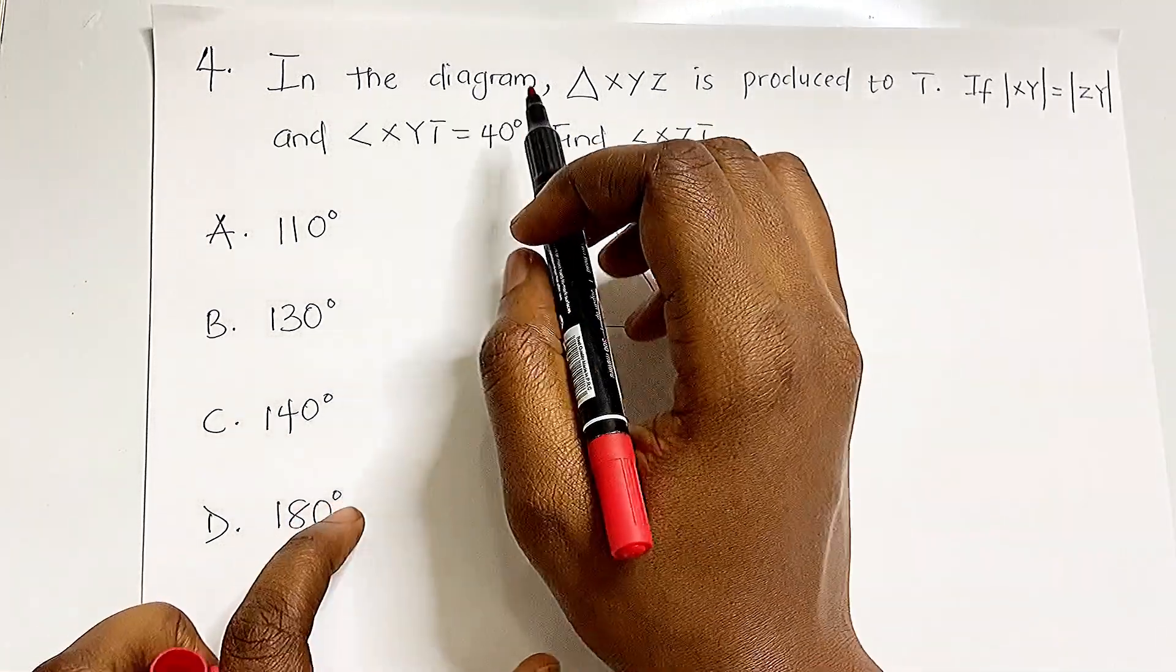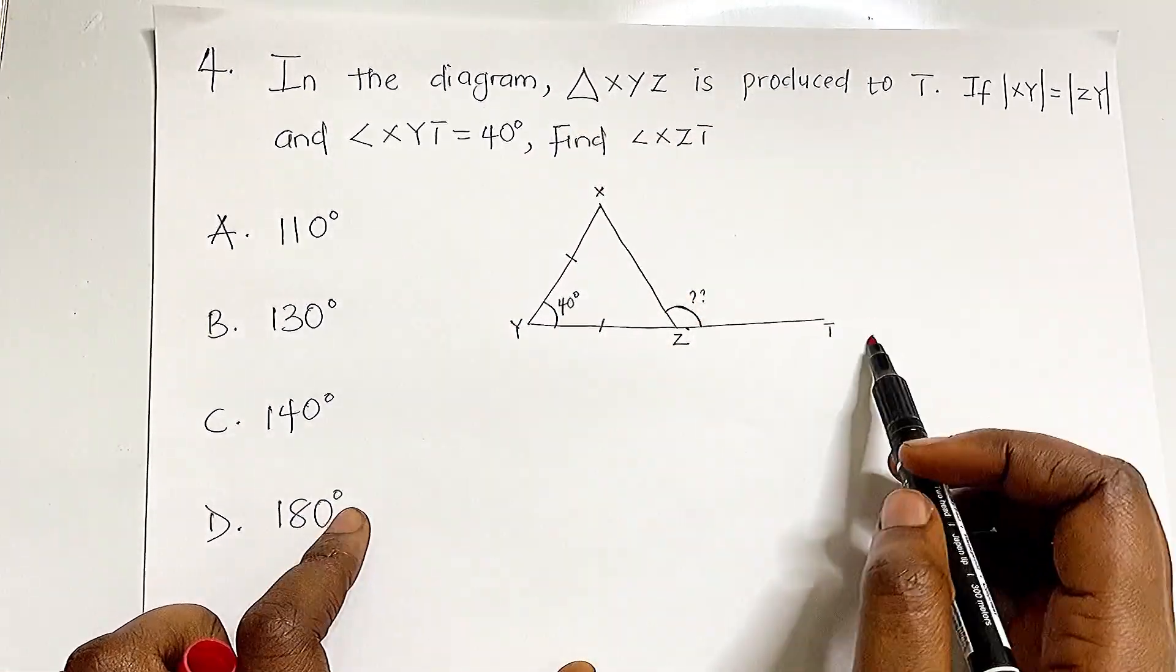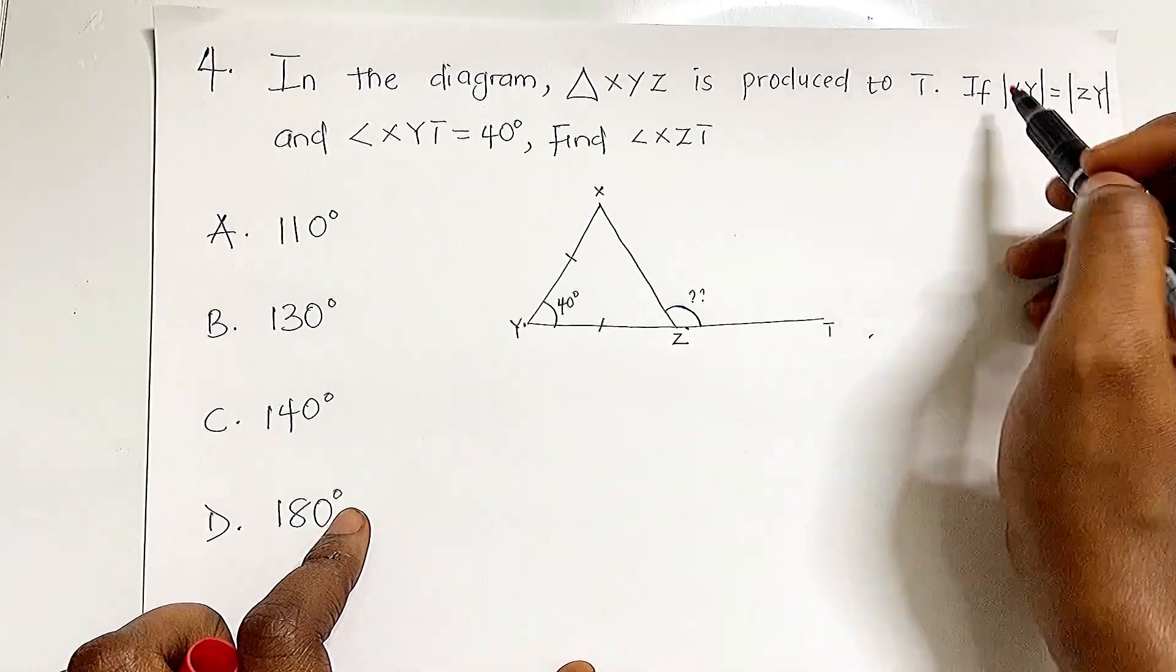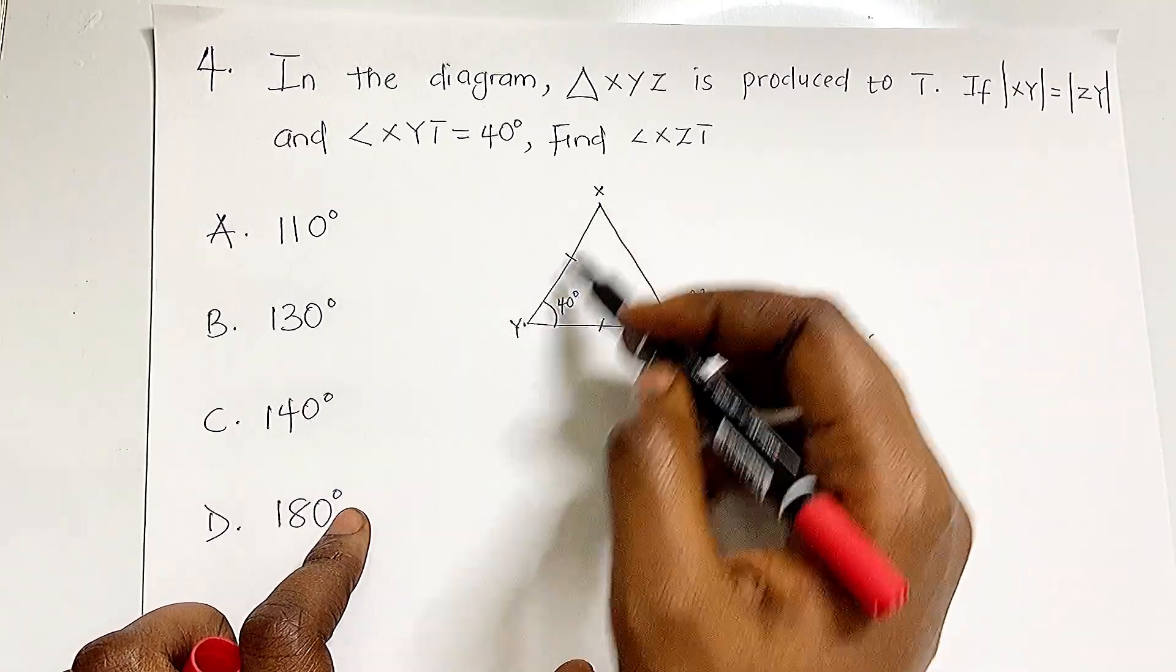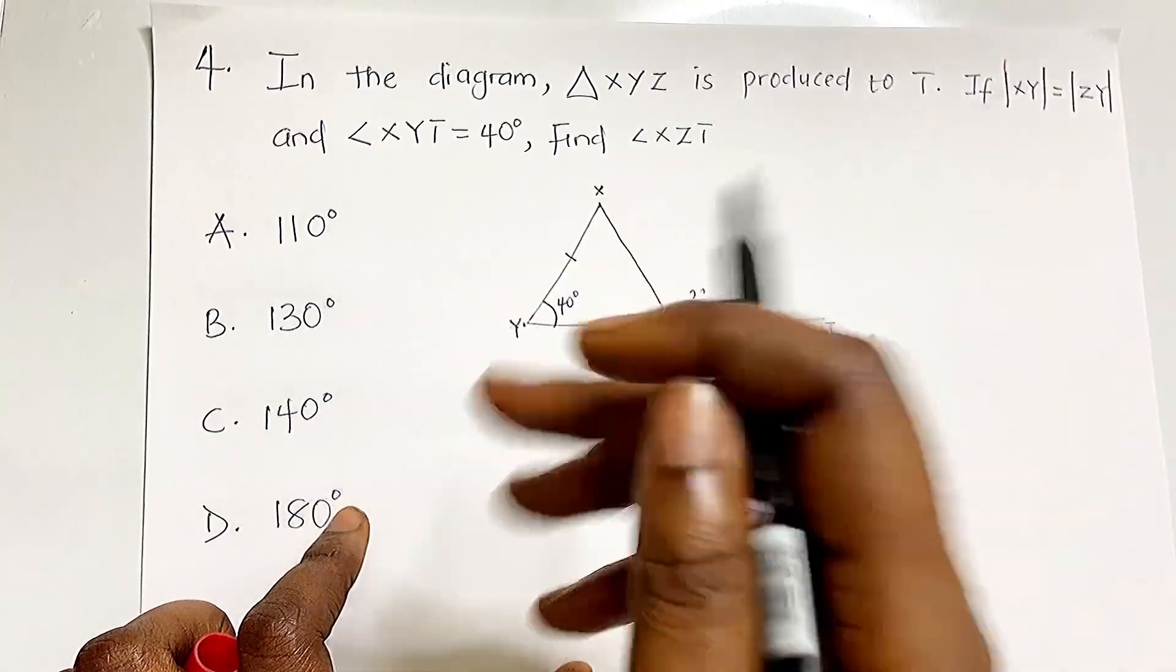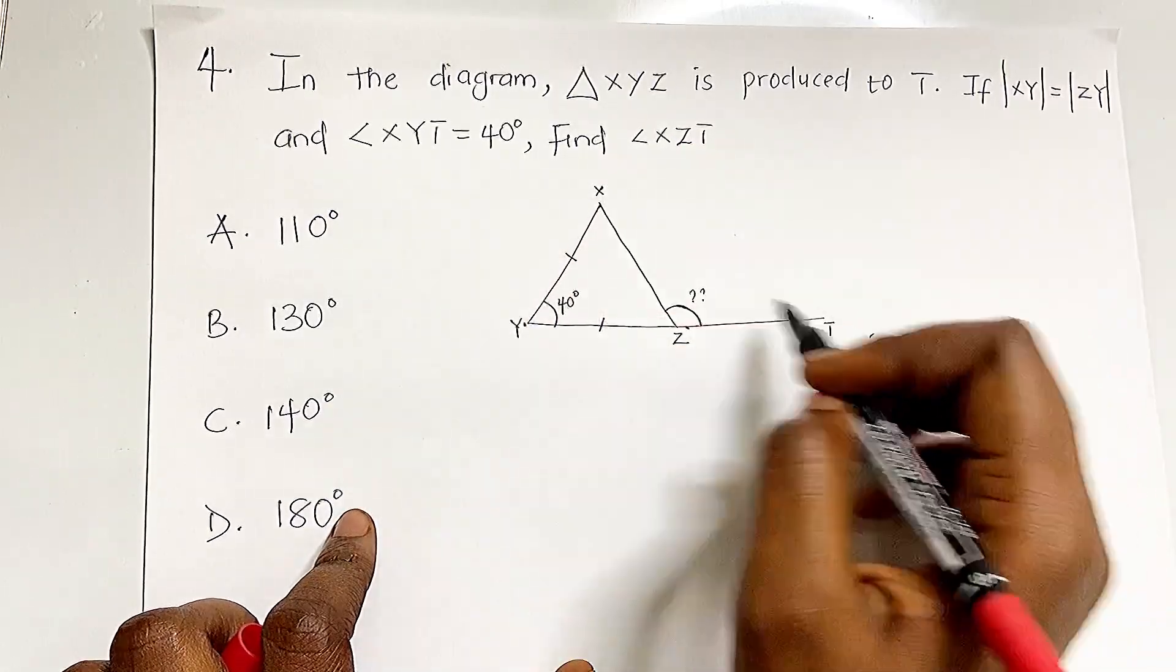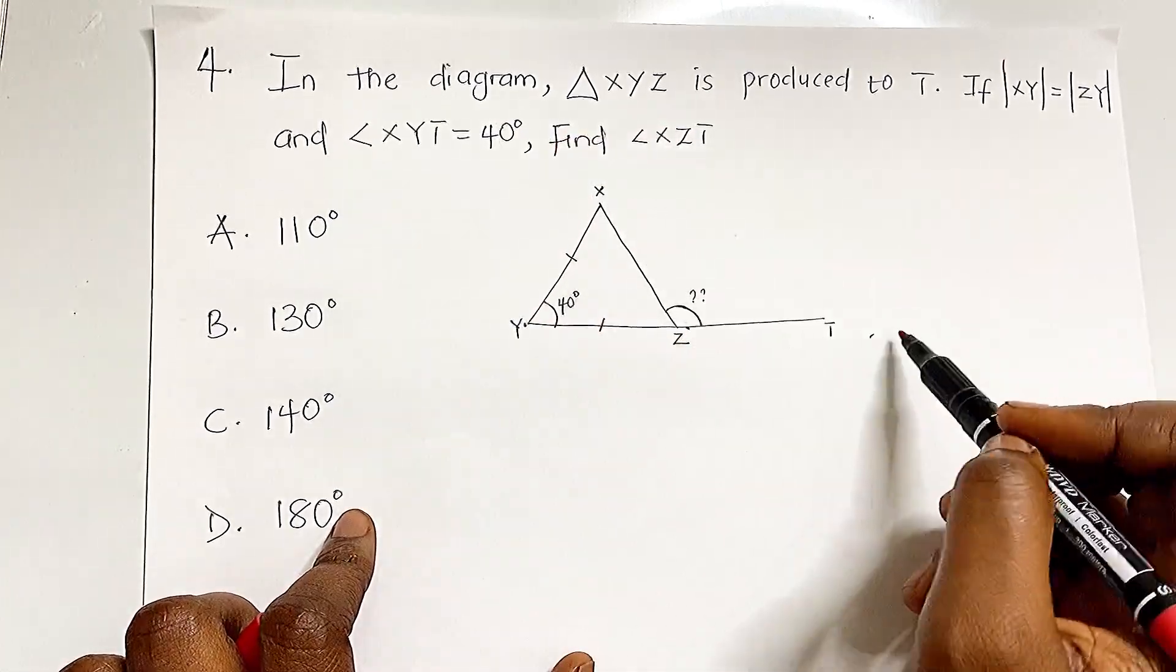Question 4: In the diagram, triangle XYZ is produced to T, meaning line YZ is extended to point T. If XY = ZY, this is an isosceles triangle. Angle XYT = 40 degrees. Find angle XZT.